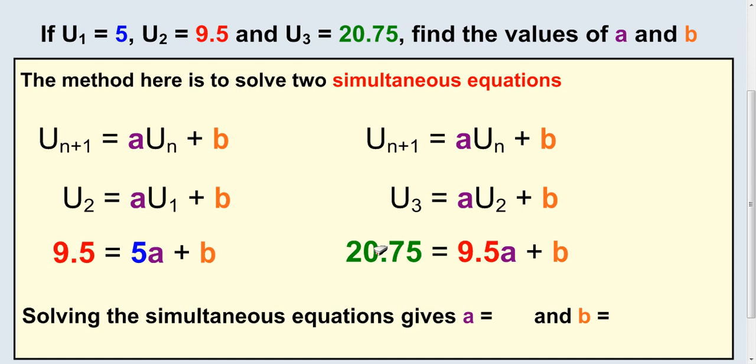I'm not actually going to solve this, but you can set this up as simultaneous equations - equation 1 and equation 2. If you subtract them, you'll see the b's cancel and you can solve it. If you try it, a should be 2.5 and b is negative 3.